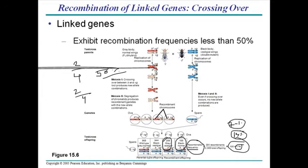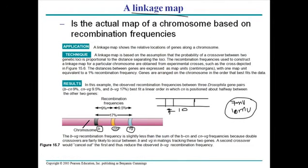We multiply that value by 100 to get a percentage. We achieve this using dihybrid crosses. After doing these crosses, we find a recombination frequency of 9.5% between cn and vg. Adding the values together, we get a recombination frequency of 17% between v and vg, which was previously discovered through Morgan's experiment.